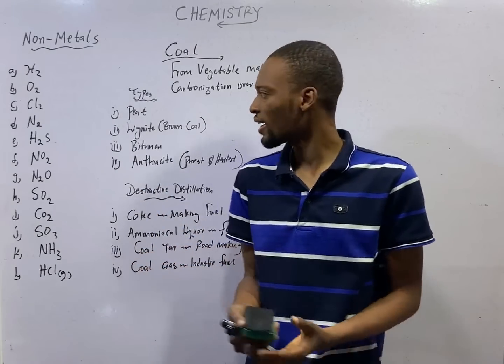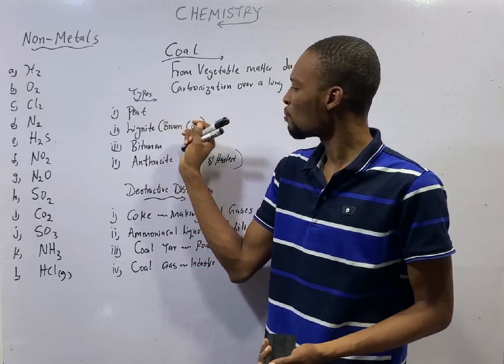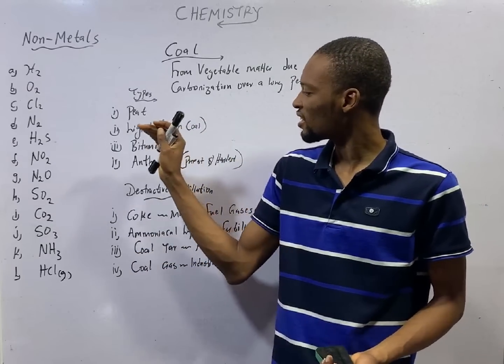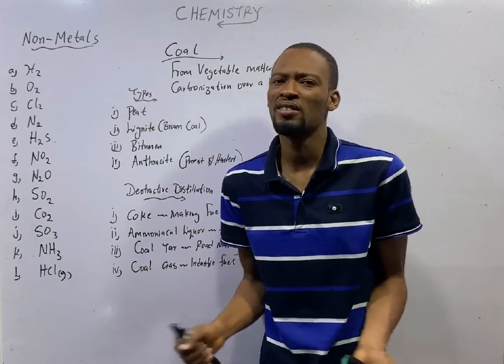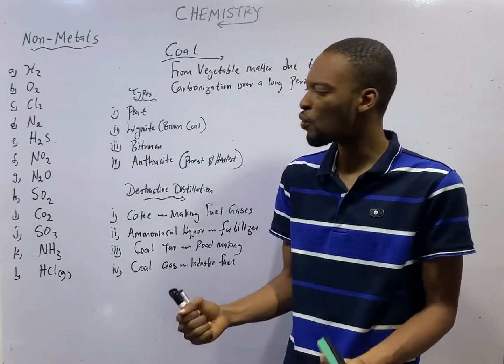The types of coal are Peat, Lignite, also referred to as brown coal. Most of the coal you see in Nigeria are brown coal, that is lignite. Bitumen is a type of coal, then anthracite is a type of coal.